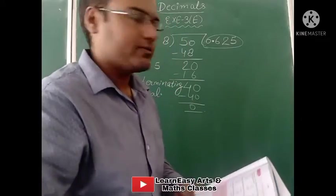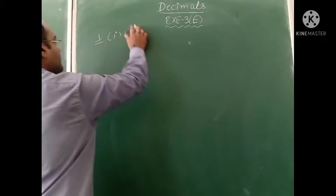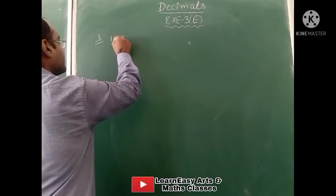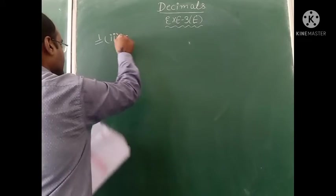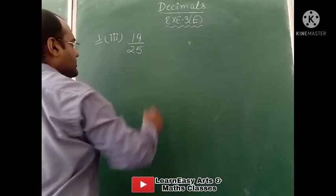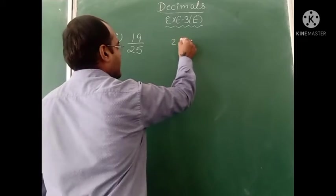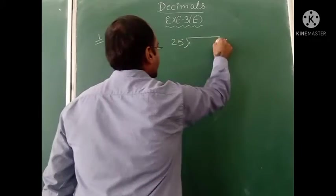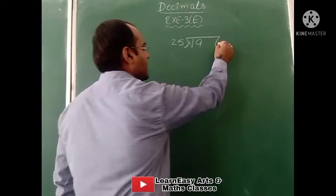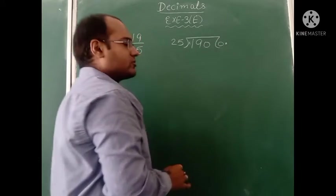Part number 3: 19 divided by 25. We have to divide them first. With a table of 25, we have to divide 19. It is not possible to divide 19 directly, so in the answer we take a decimal and add 0 here. Now this is 190.